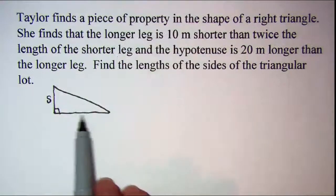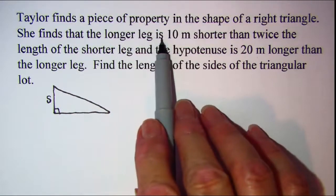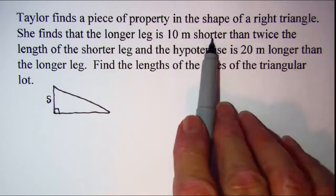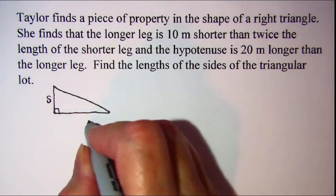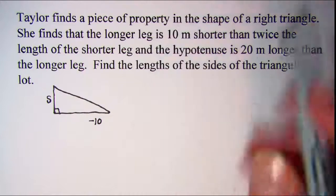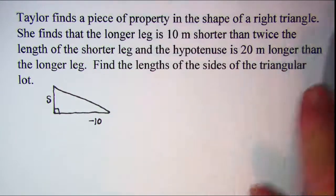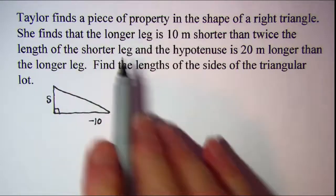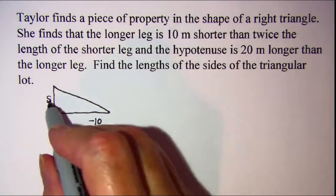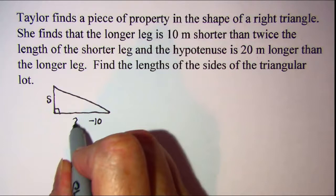Now the longer leg, which is this one, is 10 shorter than twice the length of the shorter leg. So twice the shorter leg is going to be 2s minus 10.